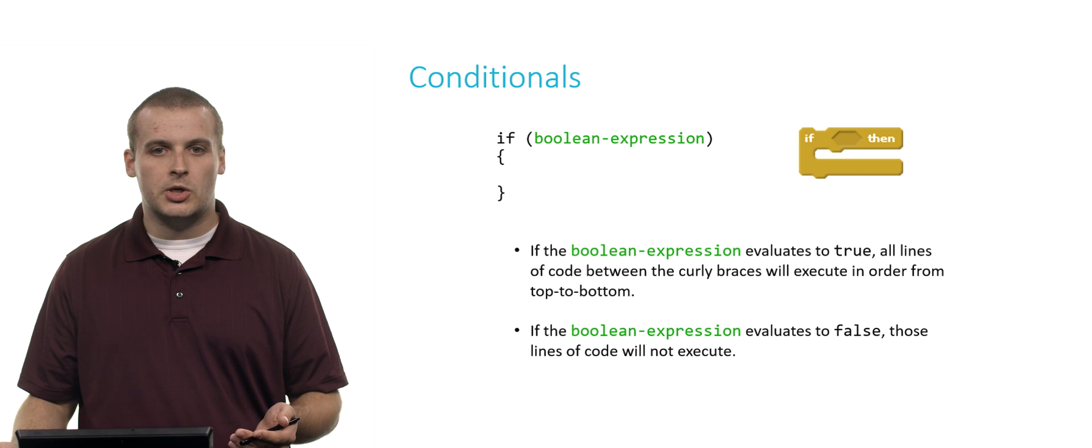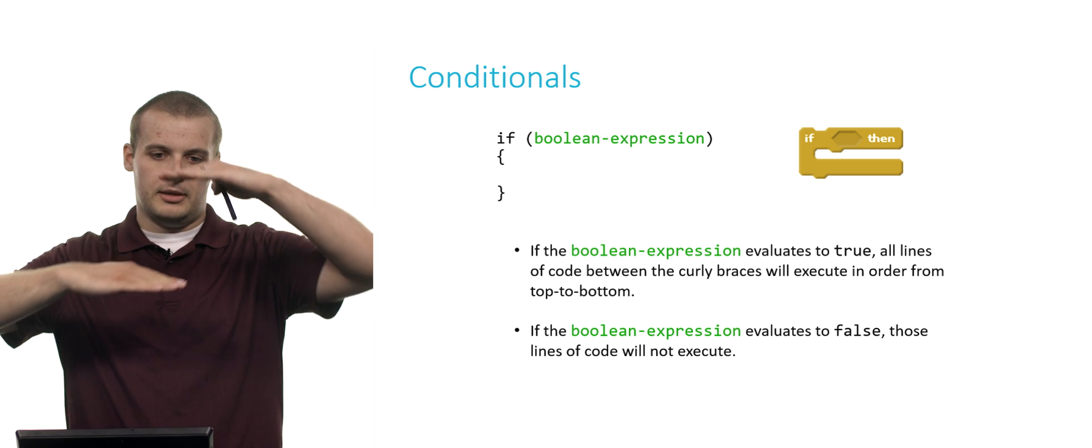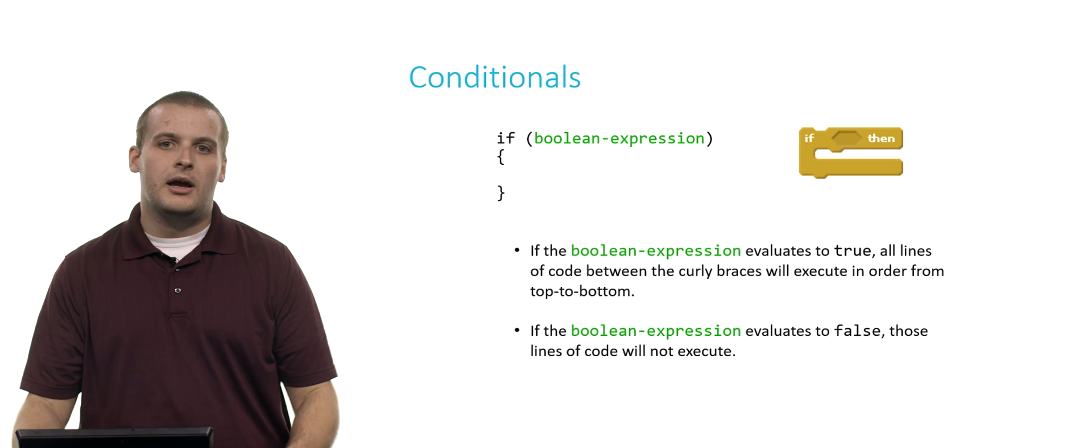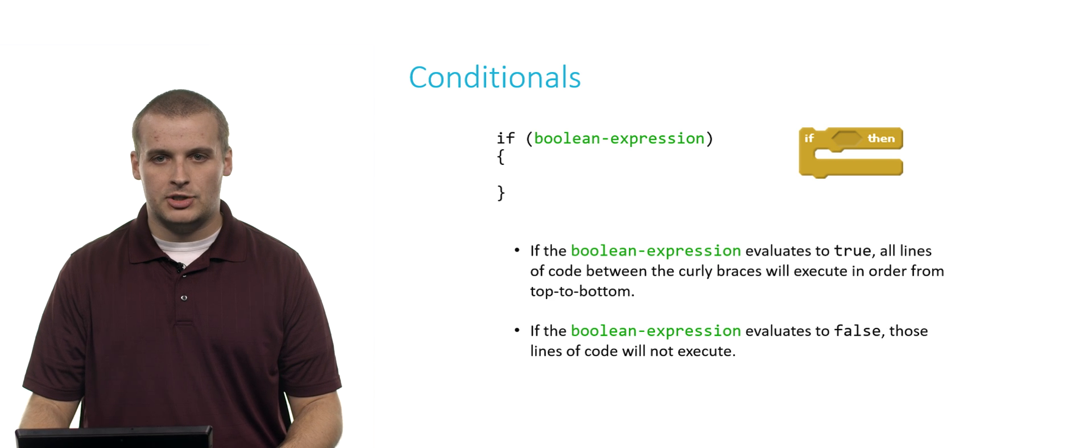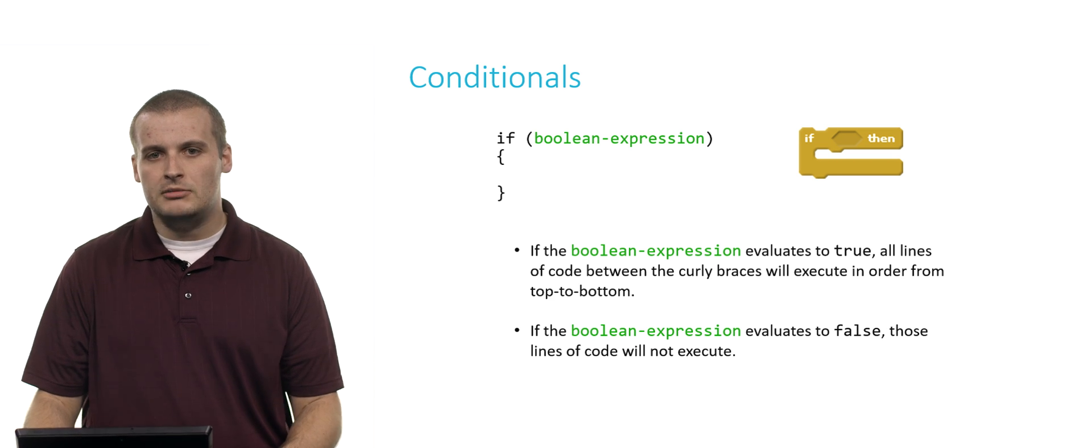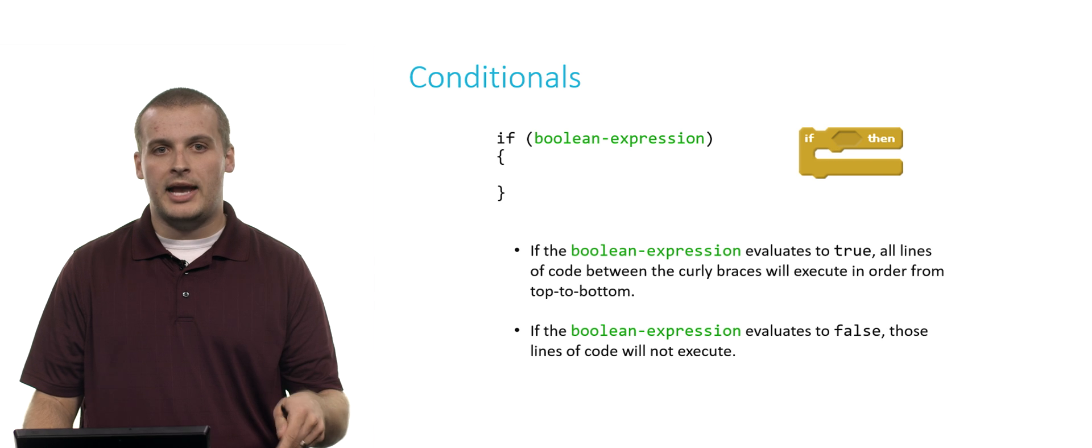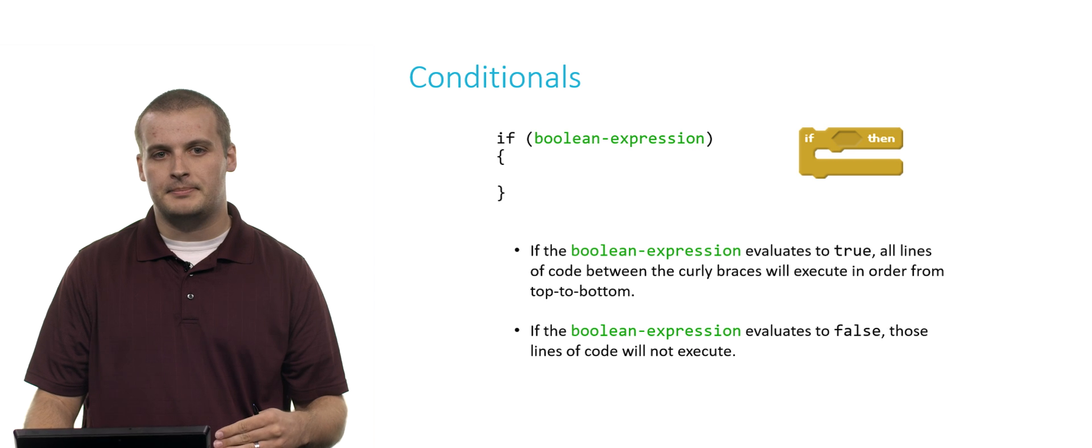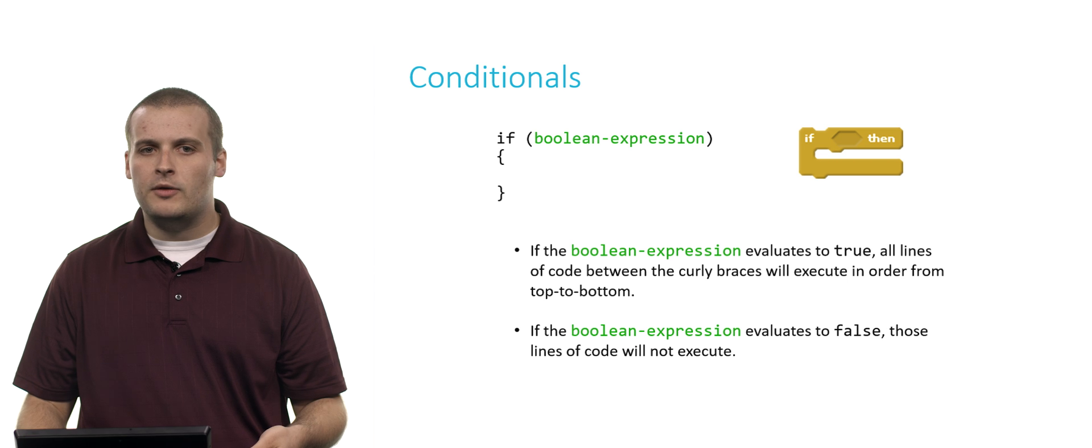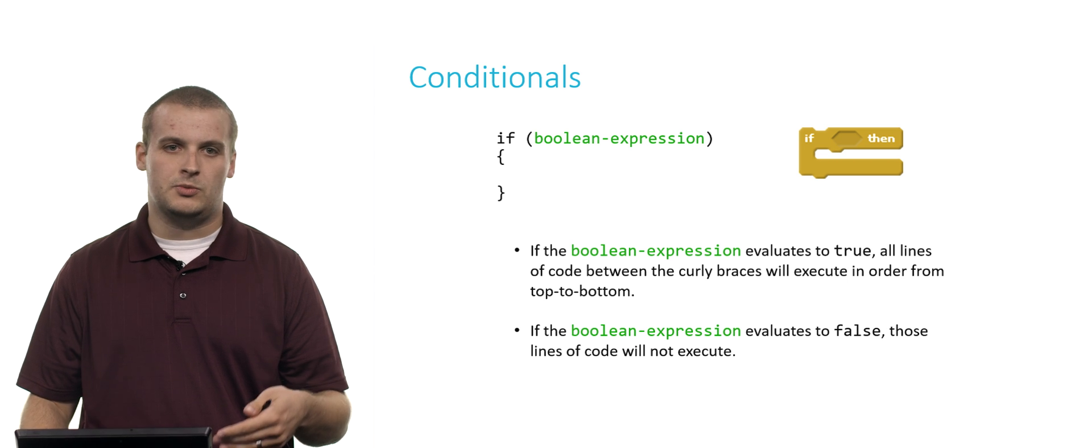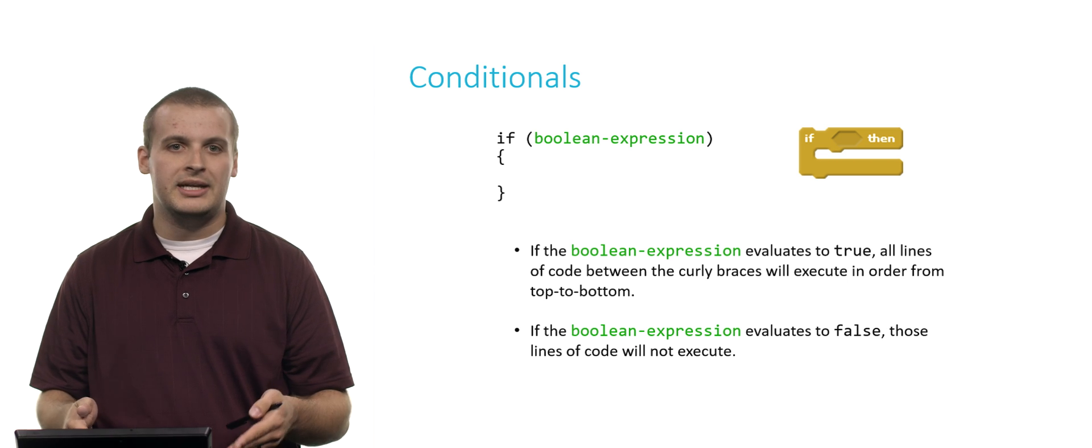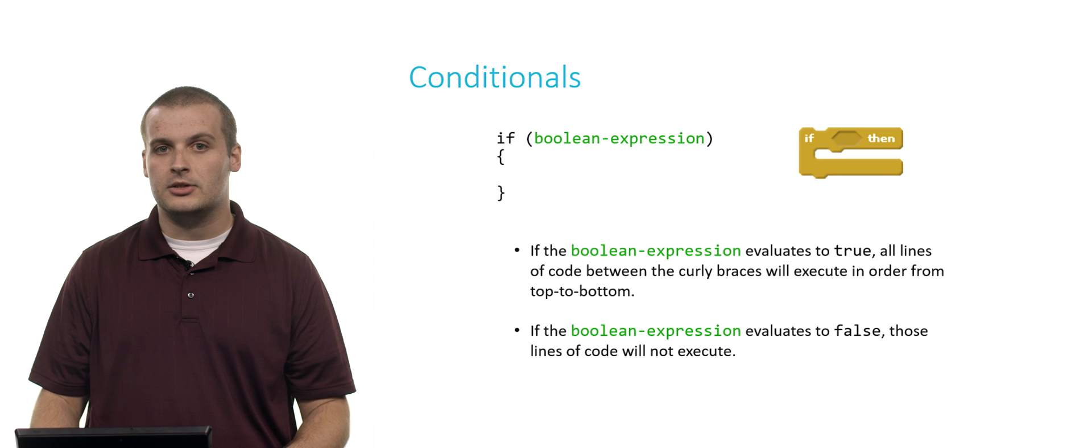Think of open curly brace and close curly brace as sort of analogous to the sandwich effect of the if block on the right from Scratch. If the Boolean expression in the if statement is true, then all of the lines of code between the curly braces will execute in order from top to bottom. If the Boolean expression is false, we'll skip over everything in between the curly braces because we only want to go down that fork in the road if the Boolean expression is true.